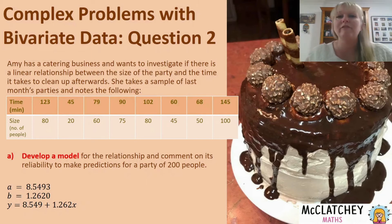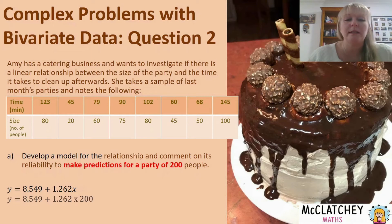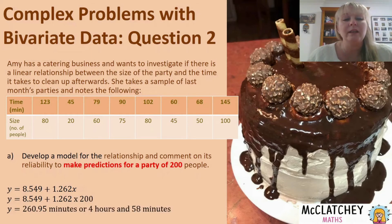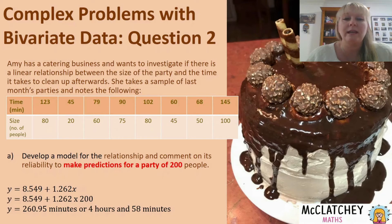So I've done that part of part A. The next part of the question asks us to make predictions for a party of 200 people. I'm going to use 200 as my x coordinate and substitute that into the equation wherever I see x. Using my calculator, that works out to approximately 260.95 minutes, which is four hours and 58 minutes approximately. So that would be how long it would take to clean up a party of that size.